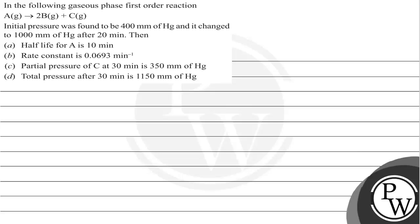Hello Bacho, let's read this question. In the following gaseous phase first order reaction A gives 2B plus C. Initial pressure was found to be 400 mm of Hg and it changed to 1000 mm of Hg after 20 minutes.